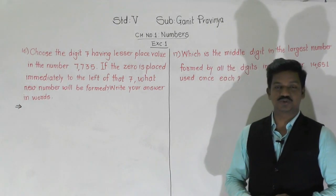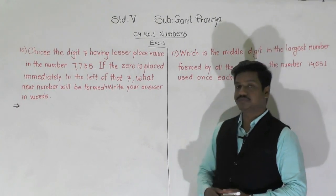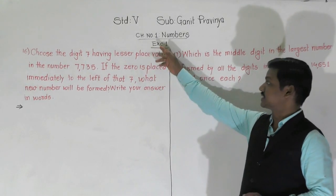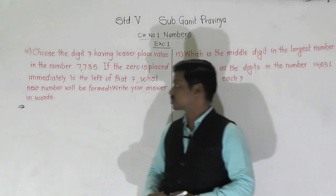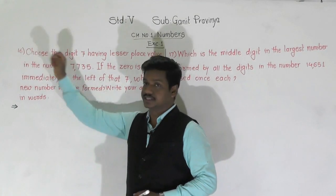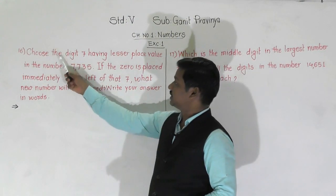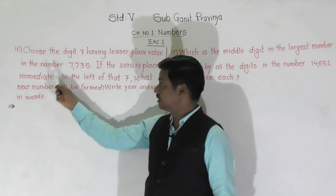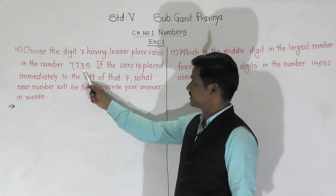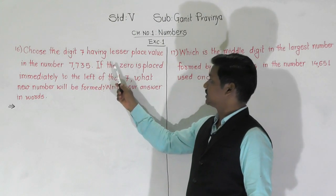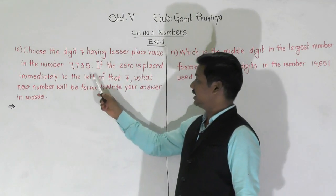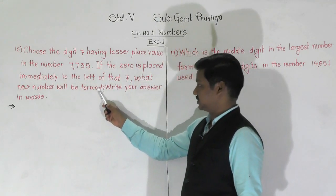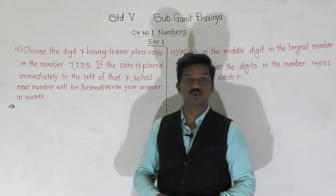Hello everyone, welcome to today's lecture of Ghanith Praveenya. In today's lecture, we are going to solve the next questions in Exercise 1. The next question is question number 16: Choose the digit 7 having lesser place value in the number 7735. If 0 is placed immediately to the left of that 7, what new number will be formed? Write your answer in words.